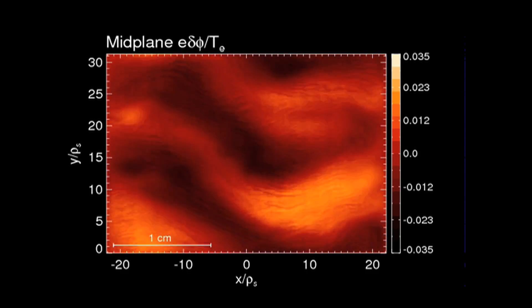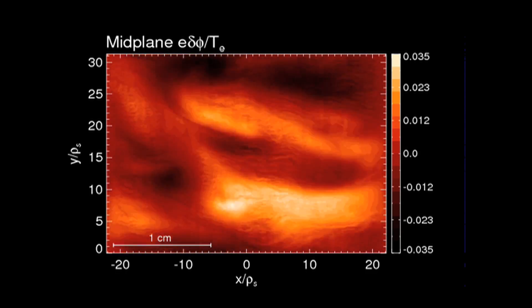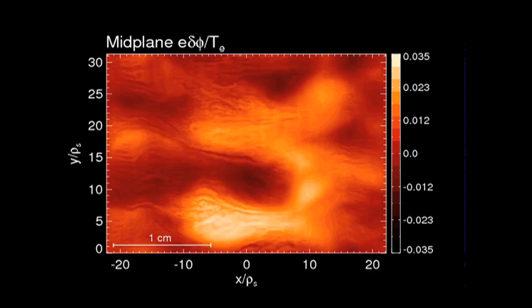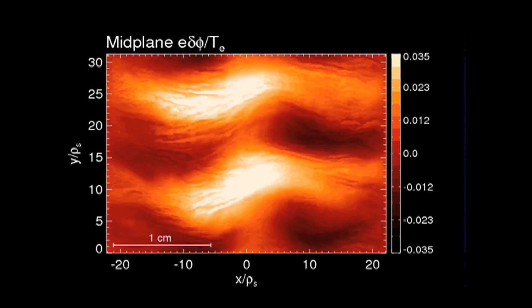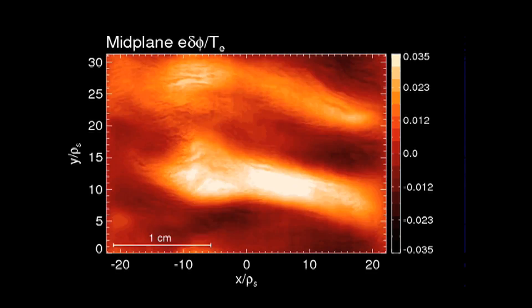For the first time, this cutting-edge simulation of realistic plasma demonstrates the coexistence of turbulence at both the tiniest scale, that of electrons, and at a scale 60 times larger, that of ions.